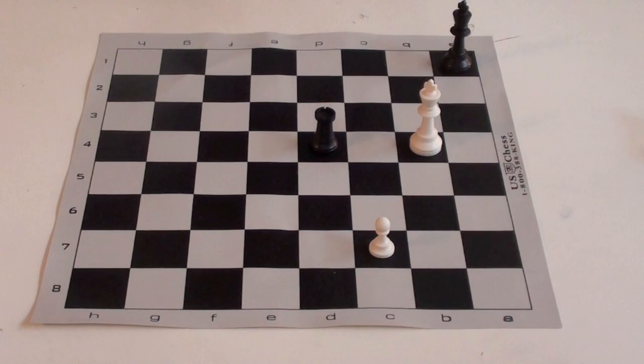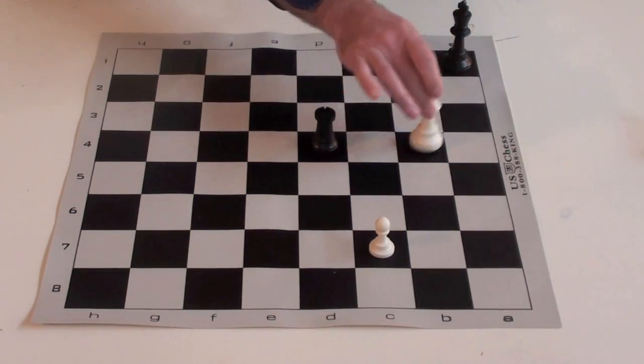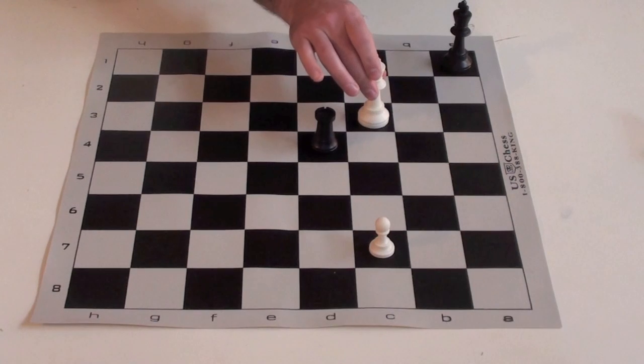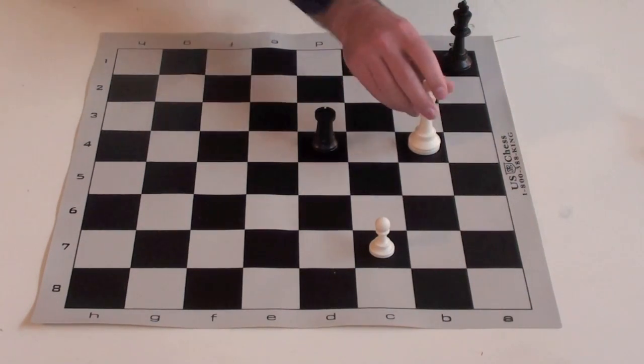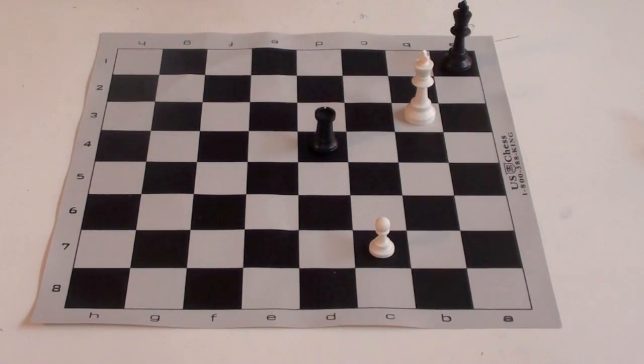And the rook to d4. We know the same thing. Can't go there, can't go there, can't go there, can't go here because of the skewer. So the best move for white is to come down, king to b3.